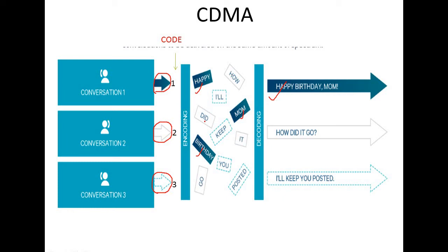On the same channel, data modulated with code 2 — for example 'how did it go' — is also transmitted. All data from all conversations, whether modulated with code 1, 2, or 3, is transmitted together within the same frequency band or channel.